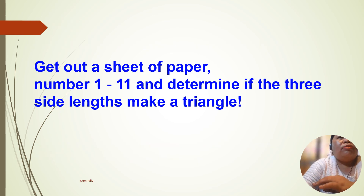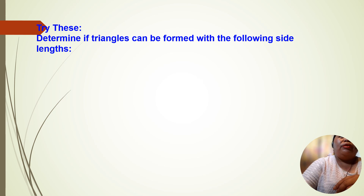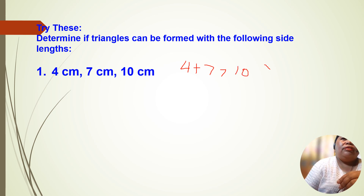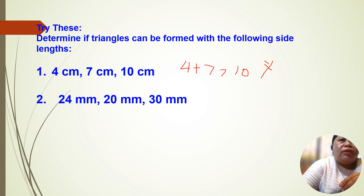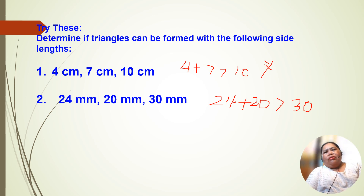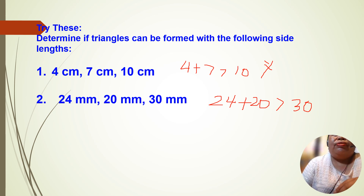Now let's work through some problems. Determine if triangles can be formed with the following side lengths. We have 4, 7, and 10 centimeters. Is 4 plus 7 greater than 10? The answer is yes. Next: is 4 plus 20 greater than 30? 24 plus 20 is greater than 30 — the answer is yes.